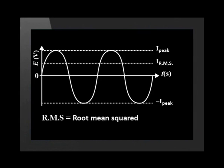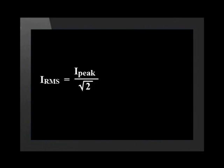Remember from grade 10 that when a voltage is applied, a current begins to flow in conductors. Current is directly proportional to voltage, so the current versus time graph looks almost identical to the voltage versus time graph. The RMS current can also be calculated using a similar equation to the RMS voltage.